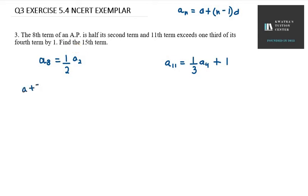It can be written as A plus 7D using the AN formula. Half of A2, A2 can be written as A plus D. Now you have to bring this 2 to the left-hand side, so it will be twice of A plus 7D equals A plus D.